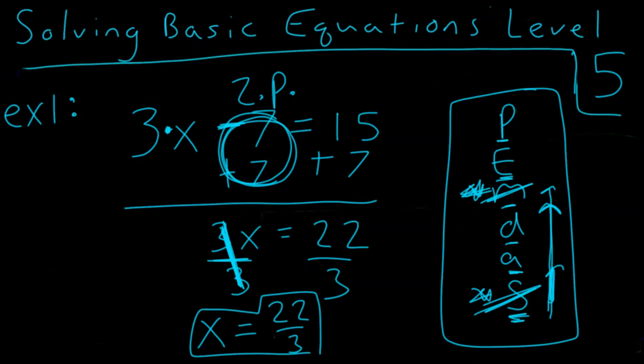And so we're going to leave our answer as 22 over 3. It's reduced as far as it can go. And that is a perfectly fine answer. All right, let's move on to our second example.